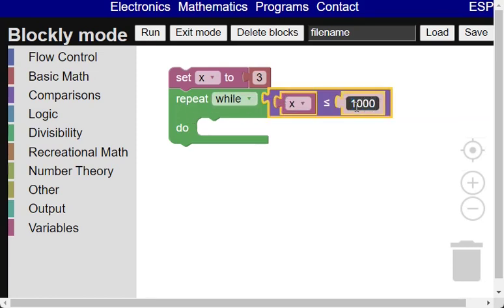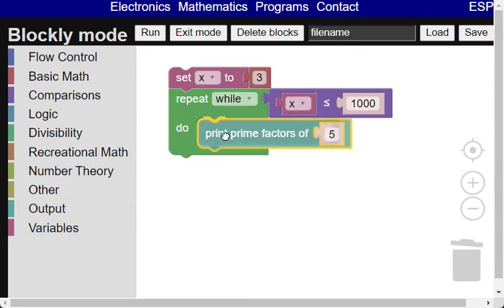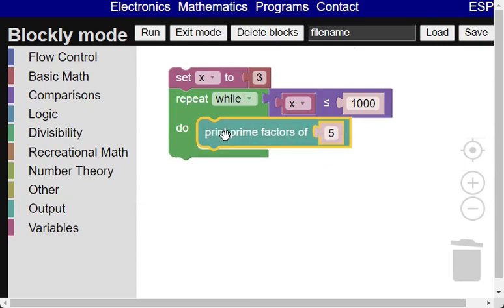Now we have to insert the blocks that form the body of the repeat loop. We drag the print prime factors block to the workspace that is in the output category. We have to print the factors of x minus 1. So we have to overwrite the number 5 by the minus operation which is in the basic math category.